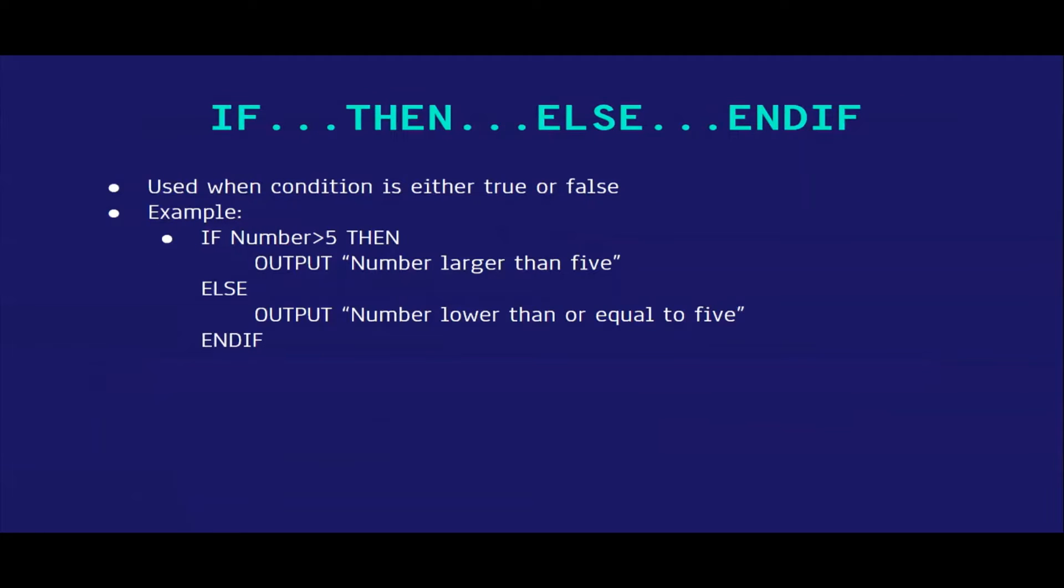The first one is IF statement. It's always used in this order: IF, THEN, ELSE and ENDIF. This is used when the condition is either true or false. For example, they are inputting a number at the start of the code. This statement asks if, then checks if the number is more than 5. If it is, then it outputs number larger than 5. Else, if it's not more than 5, it would output number lower than or equal to 5. ENDIF is used to close or end the IF statement.